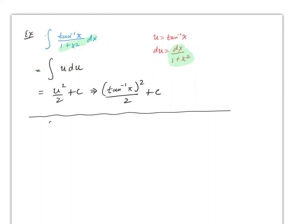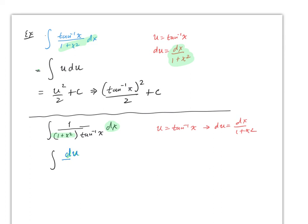Now look at the same idea but with a small change. Say that instead you have ∫(1/(1 + x²))·arctan(x) dx. The same substitution: u = arctan(x) and du = dx/(1 + x²). But the slight difference here is that the du is this part, and what remains is 1/u — which is now integral number three. Therefore this is ln|u| + c = ln|arctan(x)| + c.